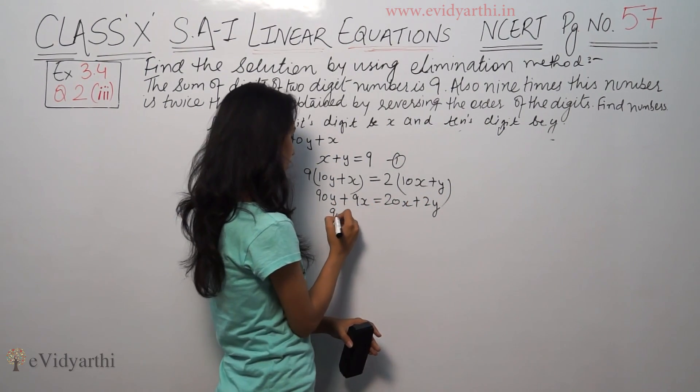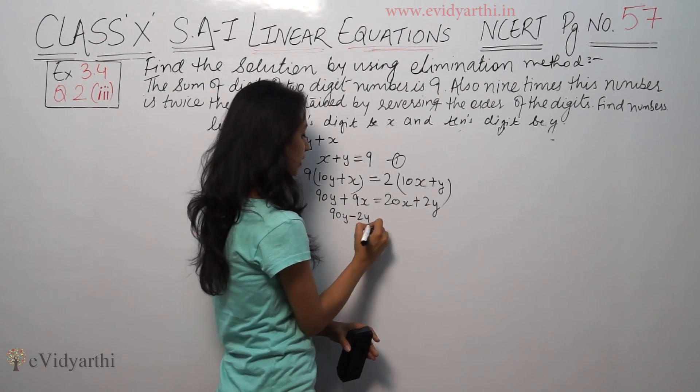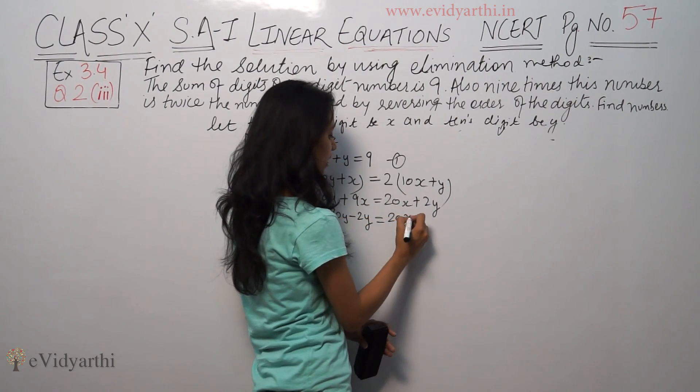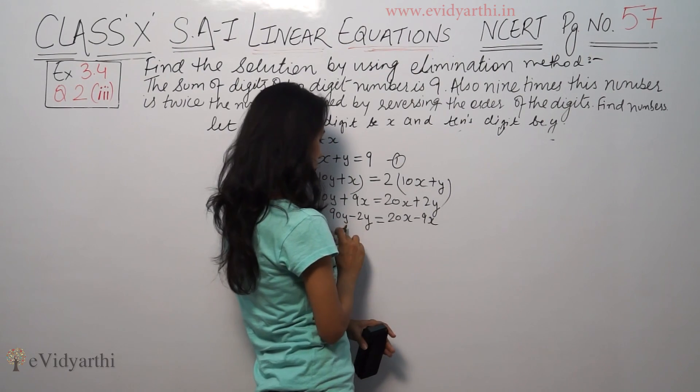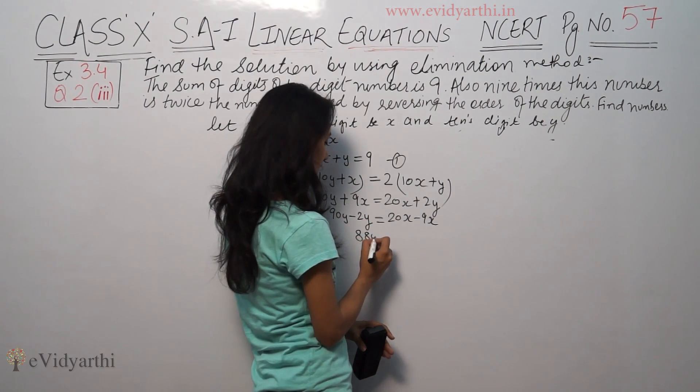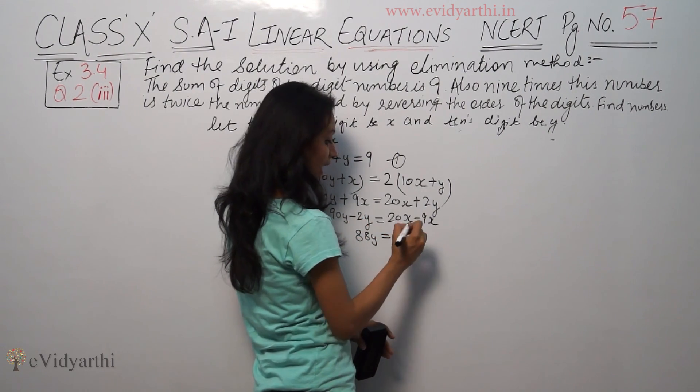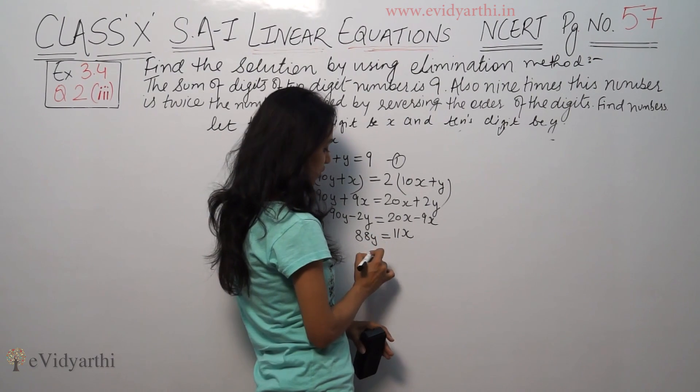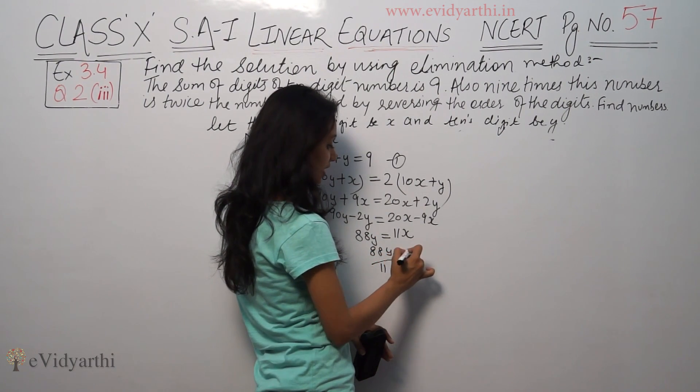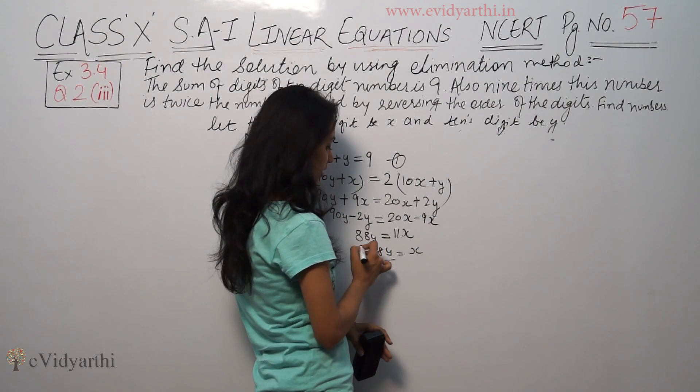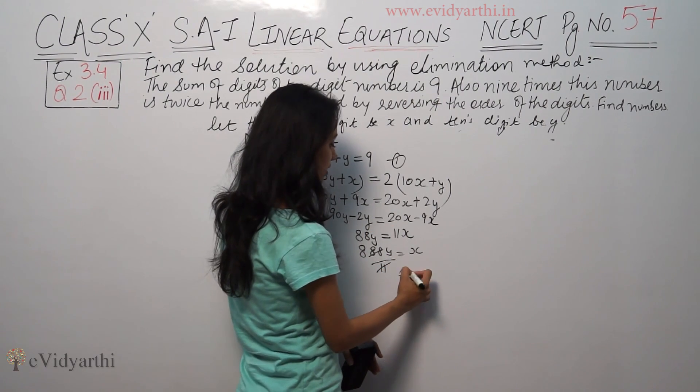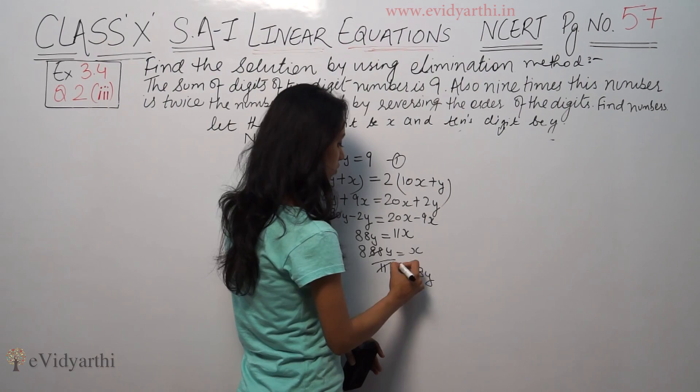Multiply: 90y plus 9x equals 20x plus 2y. So 90y minus 2y equals 20x minus 9x. 90 minus 2 is 88y equals 11x. Dividing by 11, 88y over 11 equals x. So x equals 8y.